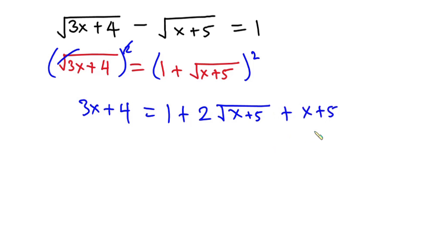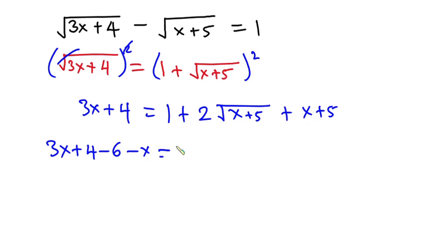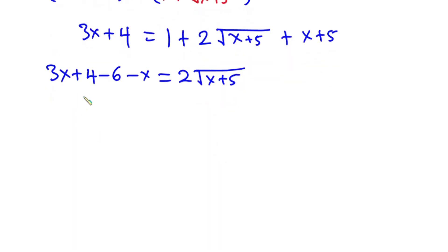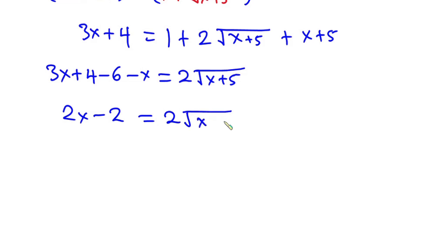From here, I'm going to move the terms without a square root to the left-hand side. So we have 3x plus 4, then 1 plus 5 is 6, so we have negative 6, and x becomes negative x. This is equal to 2 times the square root of x plus 5. Simplifying: 3x minus x is 2x, and 4 minus 6 is negative 2, giving us 2x minus 2 equals 2 square root of x plus 5.